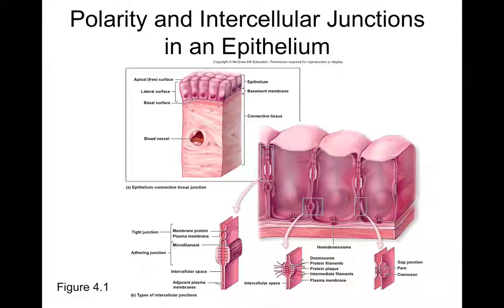Epithelial tissues you wouldn't want a lot of water crossing include the bladder — you don't want urine to be absorbed back into the bloodstream — and skin. If you didn't have skin, you would dehydrate very rapidly. Skin cells are packed full of tight junctions, which prevent water in your body from leaving between those cells. Tight junctions are therefore found in most epithelial tissues.